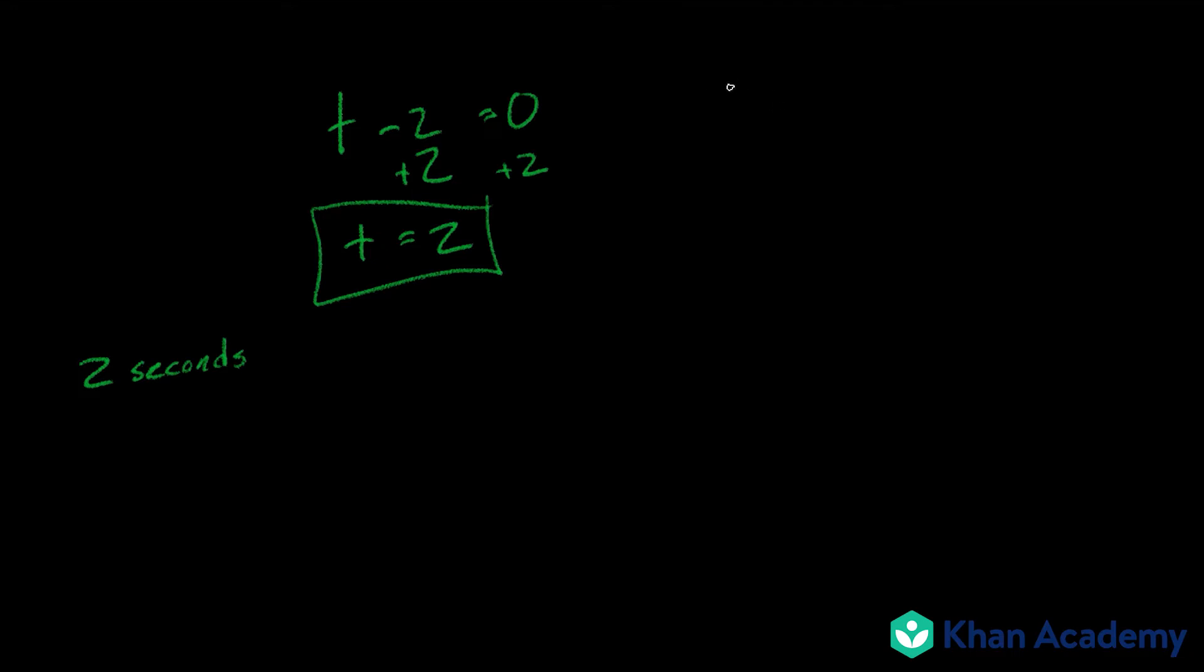And our second equation t minus 5. Add 5 to both sides. t equals 5. And that also gives us 5 seconds.